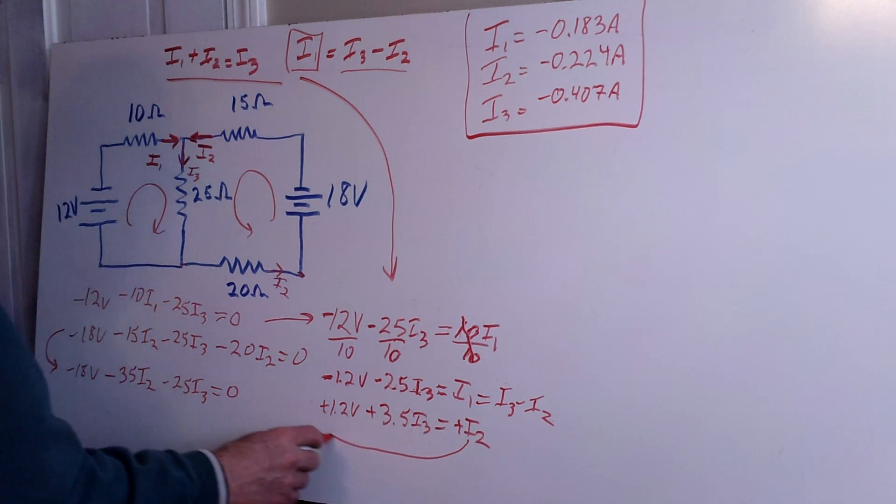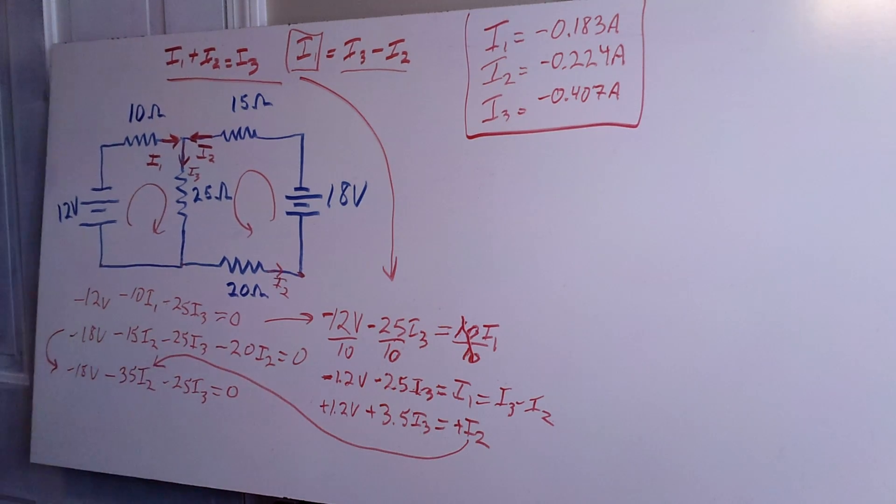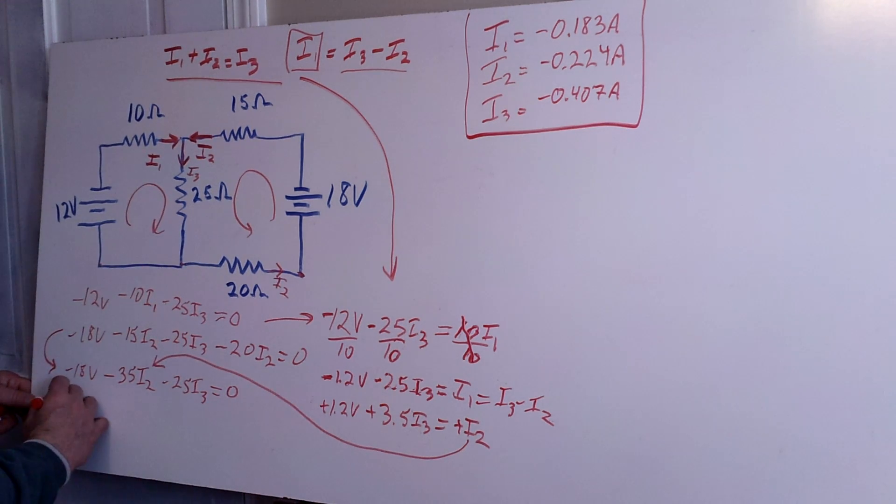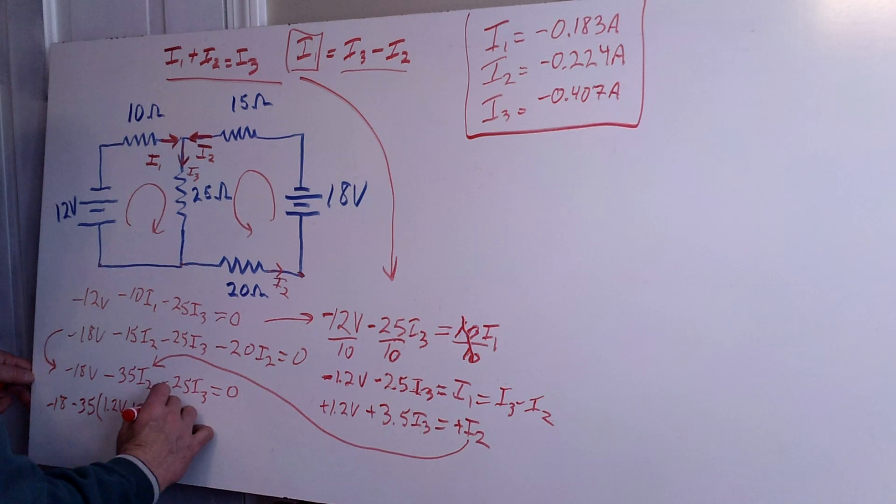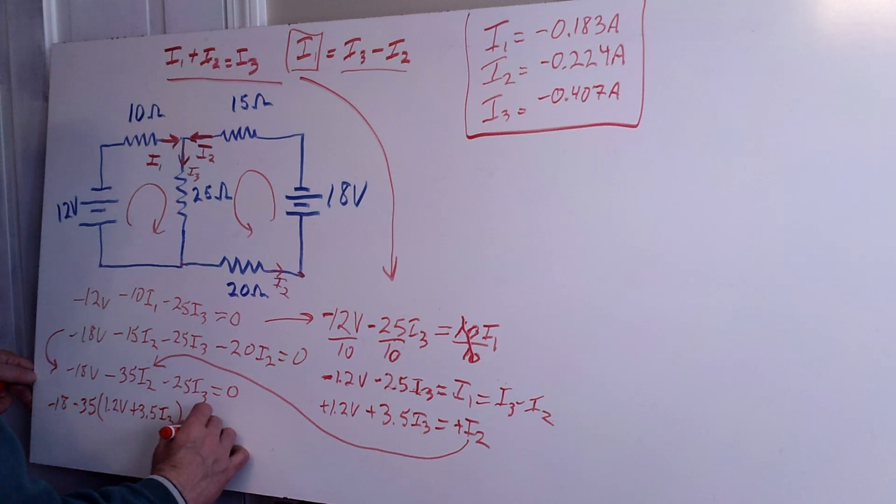So now what I'm going to do is I'm going to take this I2 and I'm going to put it into that equation and then solve for I3. So I go ahead and I take minus 18 volts and then minus 35 times my answer for I2 over here. And so that'll be 1.2 volts plus 3.5 I3. And then I take and add my other minus 25 I3 and set that equal to zero.